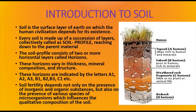The horizons are indicated by the letters A1, A2, A3, then B horizon, then C horizon, and the bedrock. The topmost A horizon contains A1, A2, and A3 and is often very rich in humus and minerals. The subsoil B horizon is poor in humus but rich in minerals. The C horizon consists of weathered rock fragments with little or no plant or animal life, and the bedrock contains only rock with no existence of any life.